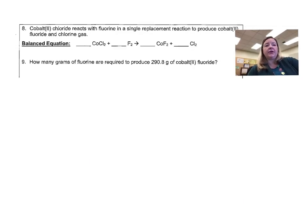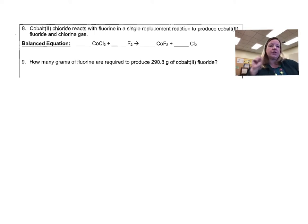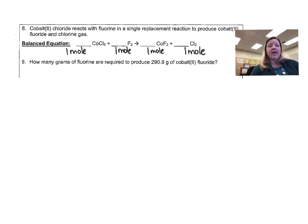Alright, so we're going to first make sure our equation is balanced — you are going to have to write and balance equations yourself. Cobalt: I have one cobalt going in and one cobalt coming out. Chlorine: I have two chlorines going in and two chlorines coming out. And I have two fluorine atoms going in and two fluorine atoms coming out. So this balanced equation tells us that we just need one mole of each material — one mole of cobalt(II) chloride to react with fluoride, producing one mole of cobalt fluoride and one mole of chlorine. So the first thing we need to do is pick out what we're given and what we need to find.